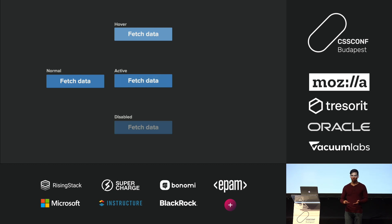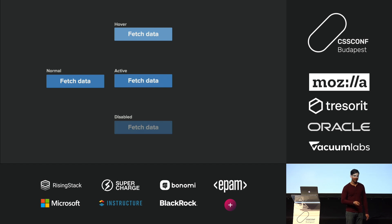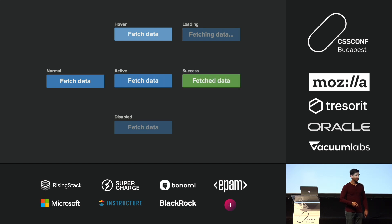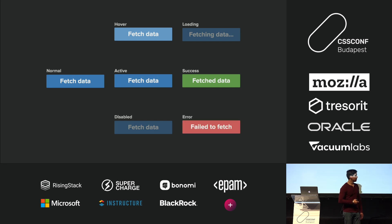We also have to think about the application states this button can be in. For example, if we're fetching data, we might want to fade it out. If it's a success, we might want it to be green and say we've got your data. Or if it's an error, you might want a different variant such as red.